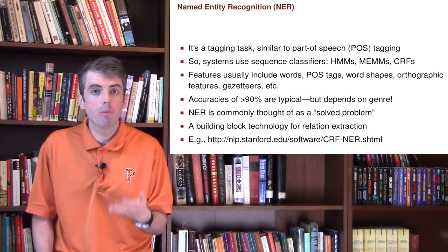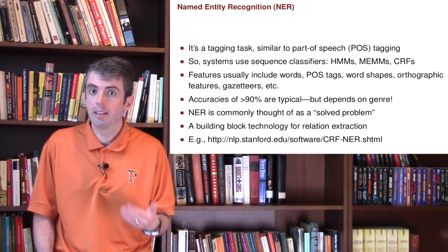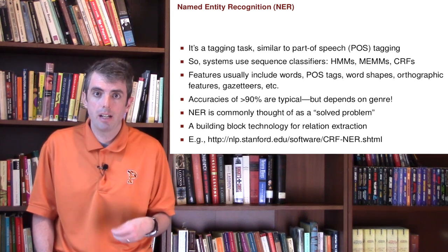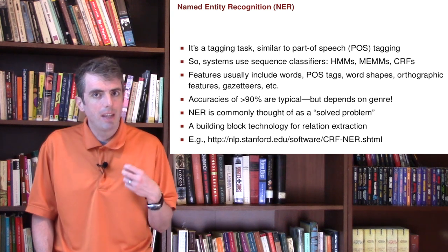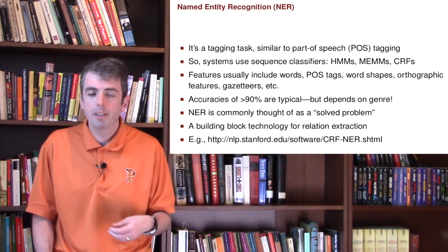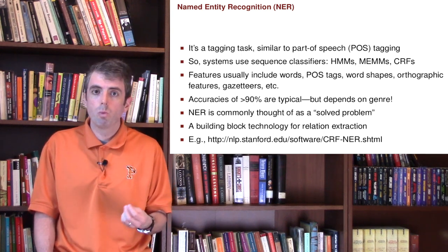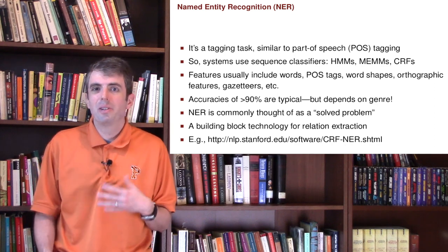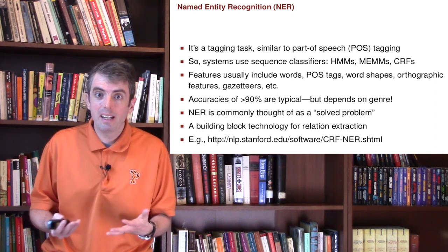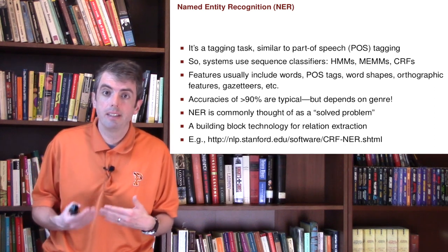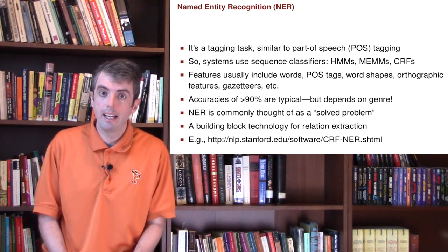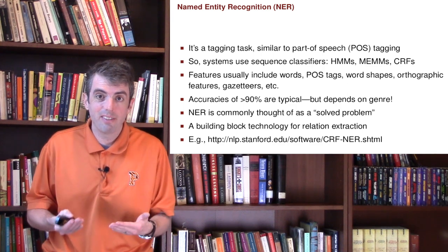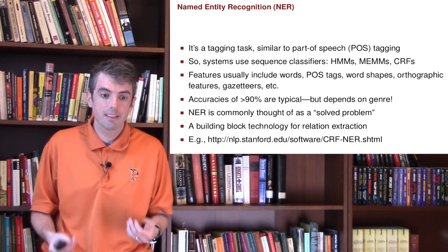There are many ways that you can do this. Machine learning tools like hidden Markov models, conditional random fields, and LSTMs all work, and they work rather well. You get over 90% accuracy on newswire data, and so this is often considered a solved task.